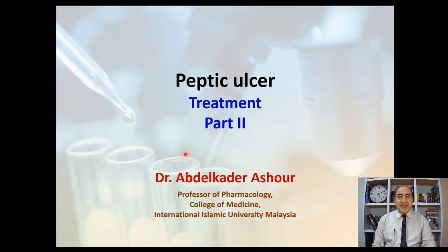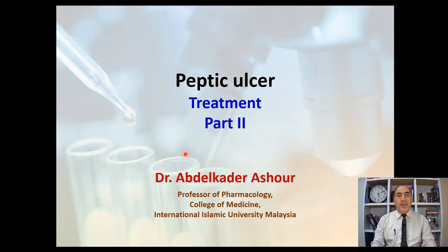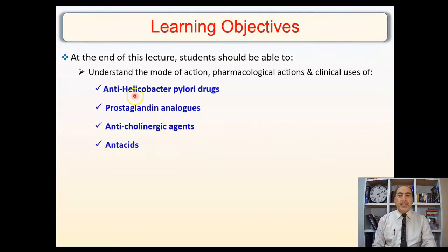Hello everybody, this is Dr. Ashur. Today we are going to continue our series of videos about peptic ulcer. In the beginning we talked about the pathophysiology of the disease. The second video was about the treatment using two drug classes: the H2 blockers and the proton pump inhibitors. Today we will continue the treatment of peptic ulcer, covering anti-H. pylori drugs, prostaglandin analogs, anti-cholinergic agents, and antacids.